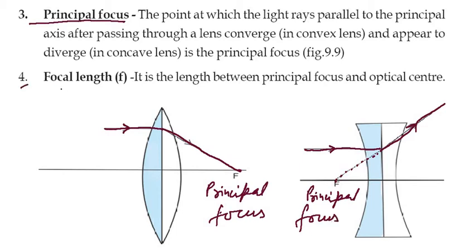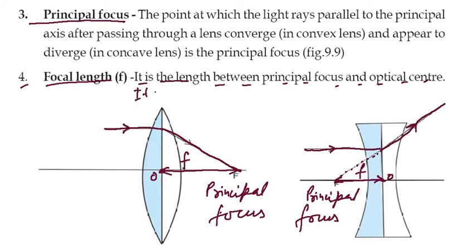Now focal length — it is the distance between the principal focus and the optical center. The distance from the optical center O to the focus F is called the focal length, and it is denoted by small f.